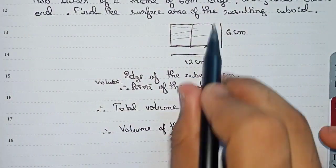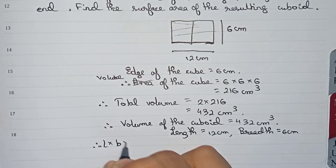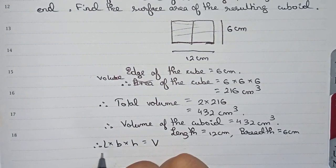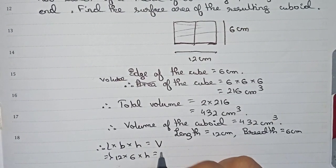From this information, you can find out the height. Therefore, length into breadth into height equals volume. So 12 into 6 into height is equal to the volume, that is 432.